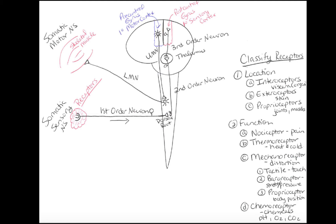That second neuron we call the second-order neuron. The thalamus then decides where to send this information, and there's a third neuron — the third-order neuron — whose axon goes up to the primary sensory cortex. So we have activation of the first-order neuron, which activates the second-order, which activates the third-order, and now your primary sensory cortex can help you understand what you felt — pain, temperature, whatever.